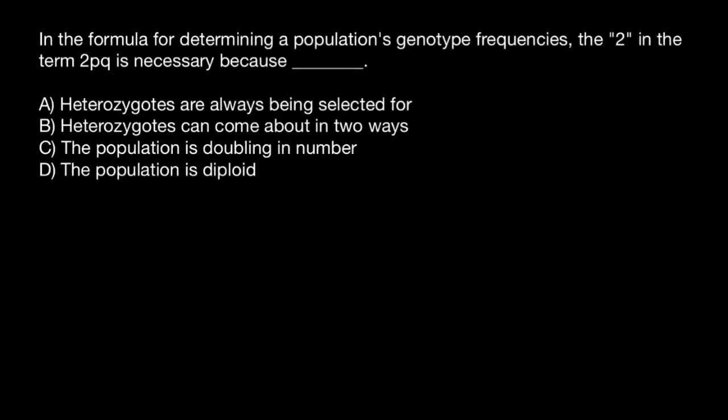Hello and welcome to Nikolai's genetics lessons. Here's the problem of the day. In the formula for determining the population genotype frequencies, the two in the term 2pq is necessary because - and you have to choose one of these answers.